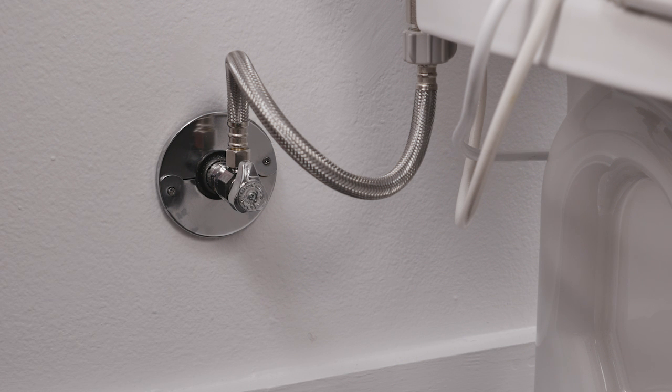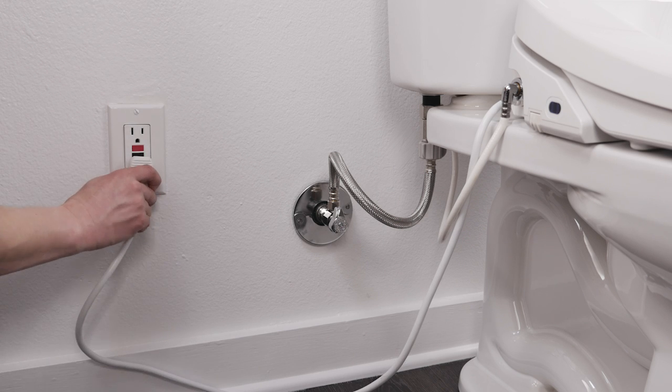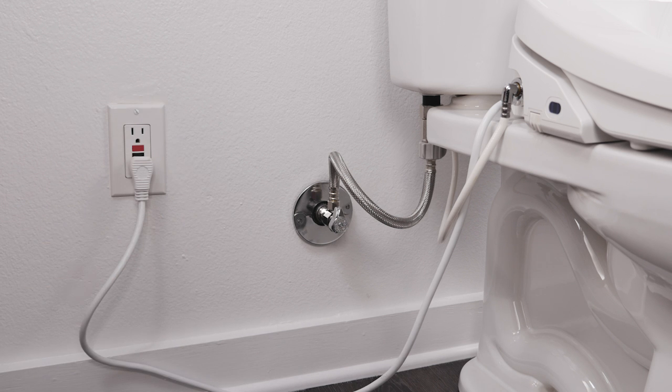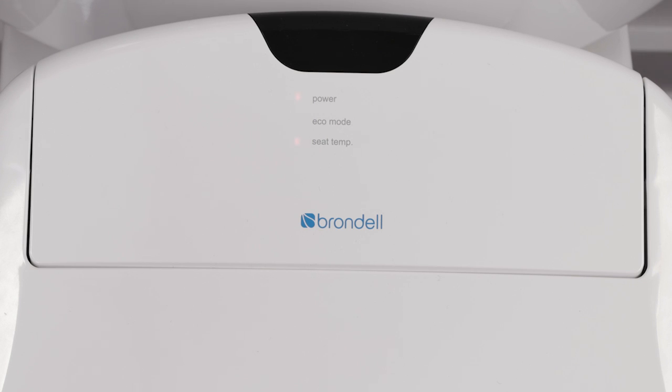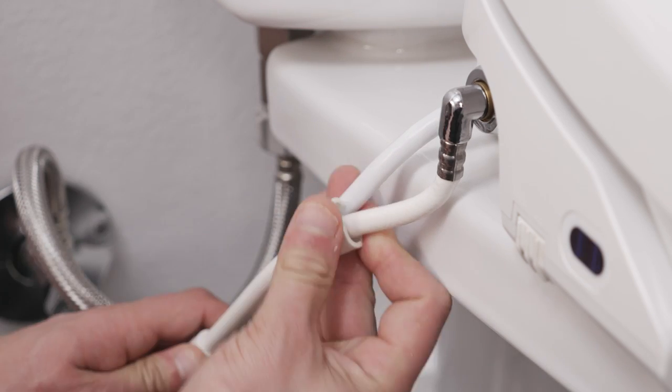If there are no leaks, plug the swash into the nearest GFI outlet. The Bidet will immediately power on, illuminating the power and seat temp lights. For a cleaner look, use the included cable clips to connect the power cord to the Bidet hose.